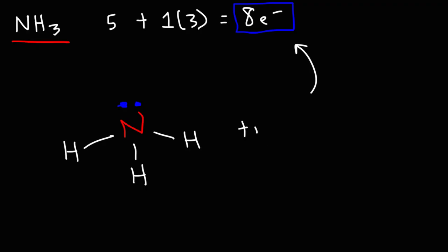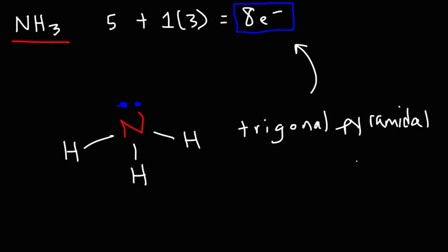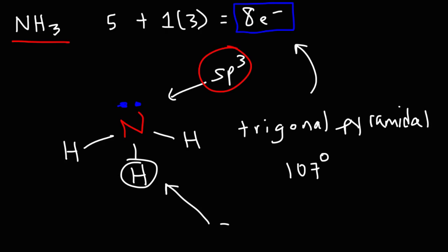In terms of its molecular geometry, it has a trigonal pyramidal structure. The bond angle of NH3 is 107 degrees, and the hybridization of the central nitrogen atom is sp3. It contains sp3 hybrid orbitals. An sp3 hybrid orbital is simply a mix of one s orbital and three p orbitals. The hybridization of the hydrogen is simply s.